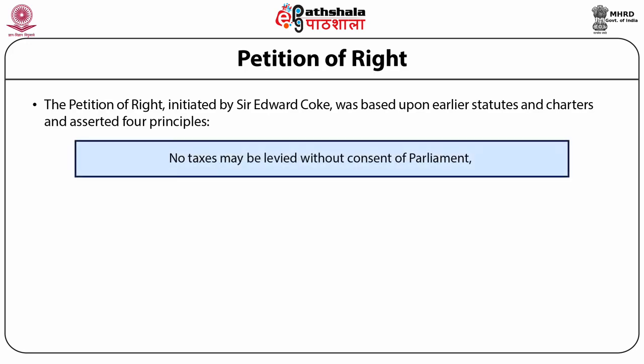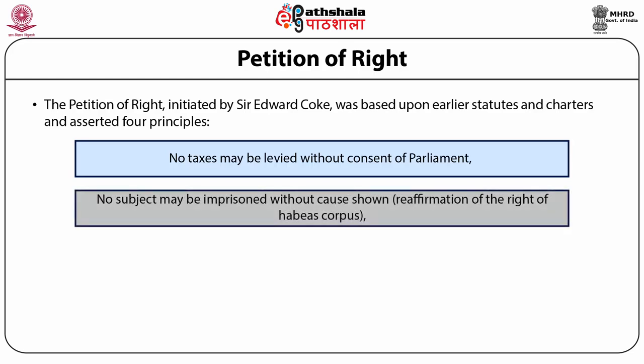The Petition of Right was initiated by Sir Edward Coke, a member of Parliament, and was based upon earlier statutes and charters. It asserted four primary principles: no taxes may be levied without the consent of Parliament; no subject may be imprisoned without cause shown — reaffirming habeas corpus, the Latin maxim meaning 'you shall produce the body.' In India, if arrested, one must be produced before a magistrate within 24 hours.